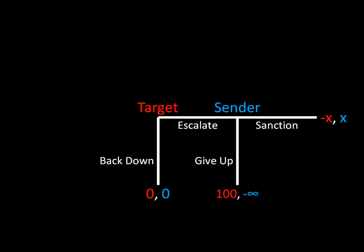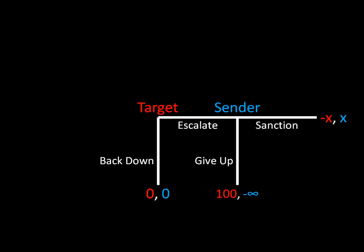We can see this by setting up a pretty simple game. This is a target and a sender choosing whether to escalate all the way up to a sanctions crisis. We have our target in red and his payoffs are in red, and the sender's payoffs are in blue. The target can either back down from the issue that the sender doesn't like — essentially concede it to the sender — or the sender can, after the target has escalated, choose to sanction or give up. Just note how the different outcome of the game is going to change as a particular payoff changes.